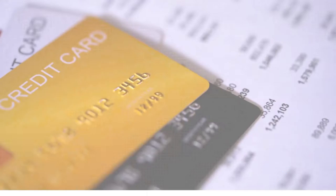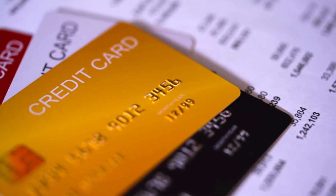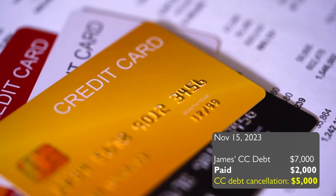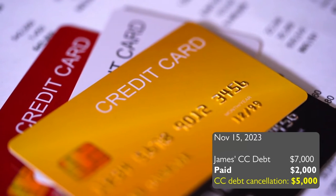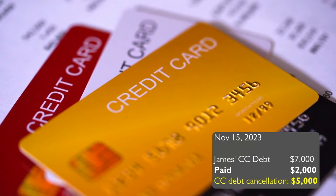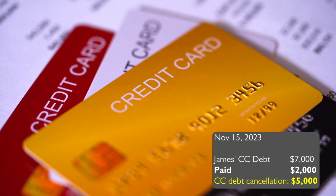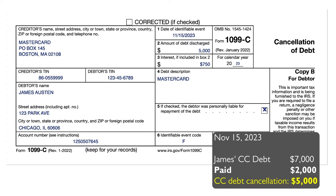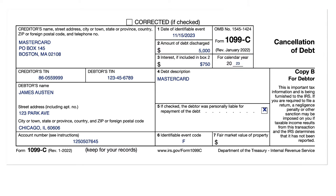James made a deal with his credit card company to pay $2,000 on his $7,000 Mastercard credit card balance, and the company agreed to take it as payment in full. He received a Form 1099-C from his credit card company reporting $5,000 in Box 2.